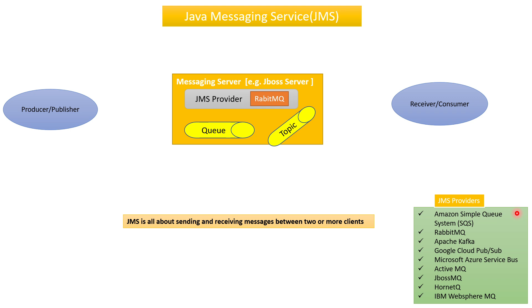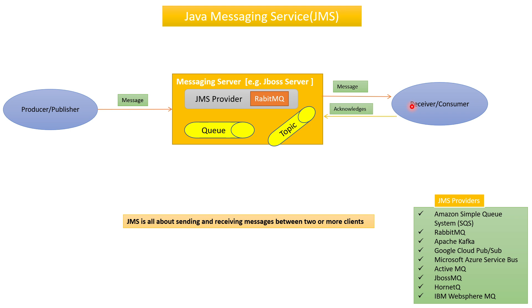So there is a producer which will produce the message, and on the other side there will be a consumer which will consume the message. The producer sends the message through a messaging server, which then forwards it to the consumer. Once the consumer receives the message, it sends an acknowledgement back. This model is known as the producer-consumer model.